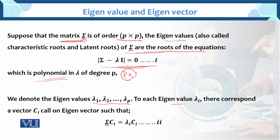To each eigenvalue λᵢ (where i = 1, 2, ..., p), there corresponds a vector Cᵢ called an eigenvector. From equation 2, we can generate eigenvectors: ΣCᵢ = λᵢCᵢ. For each eigenvalue, we generate a corresponding eigenvector.